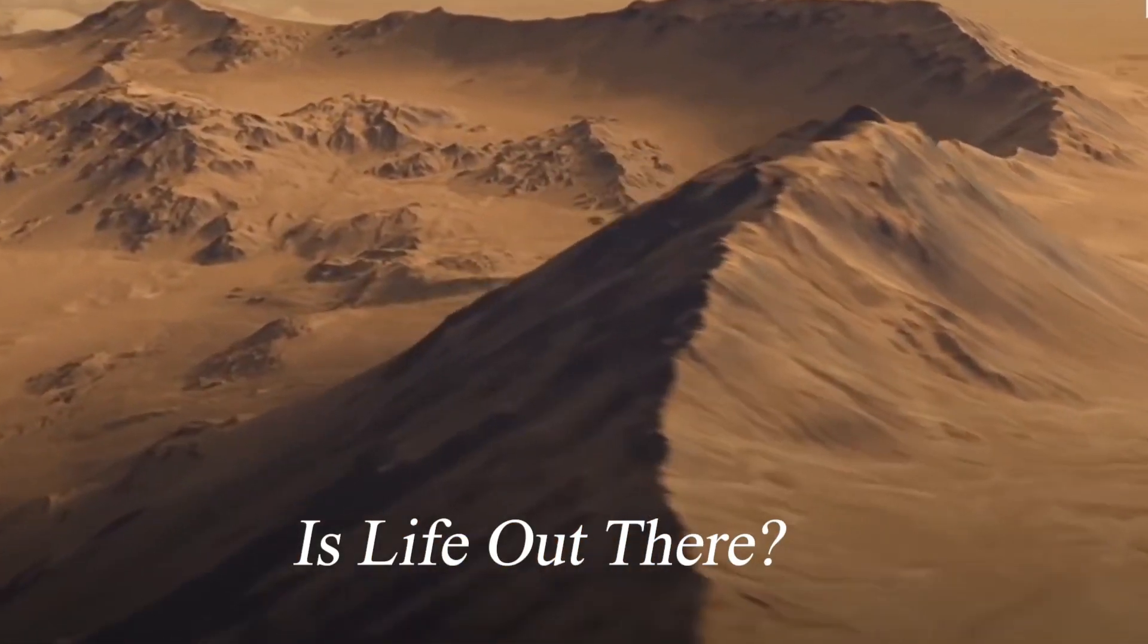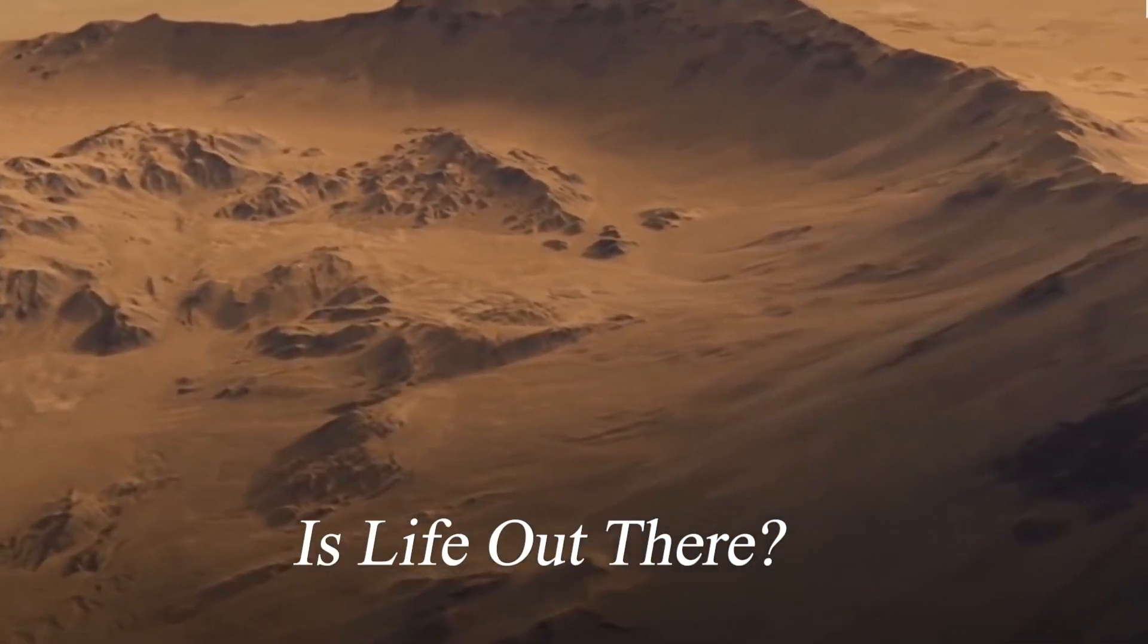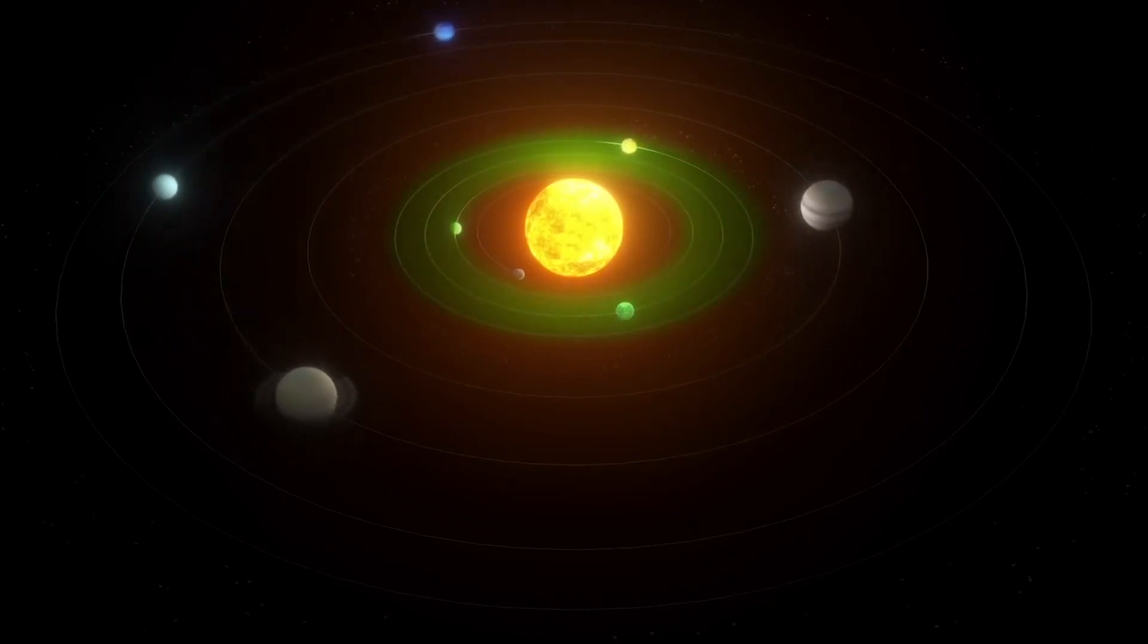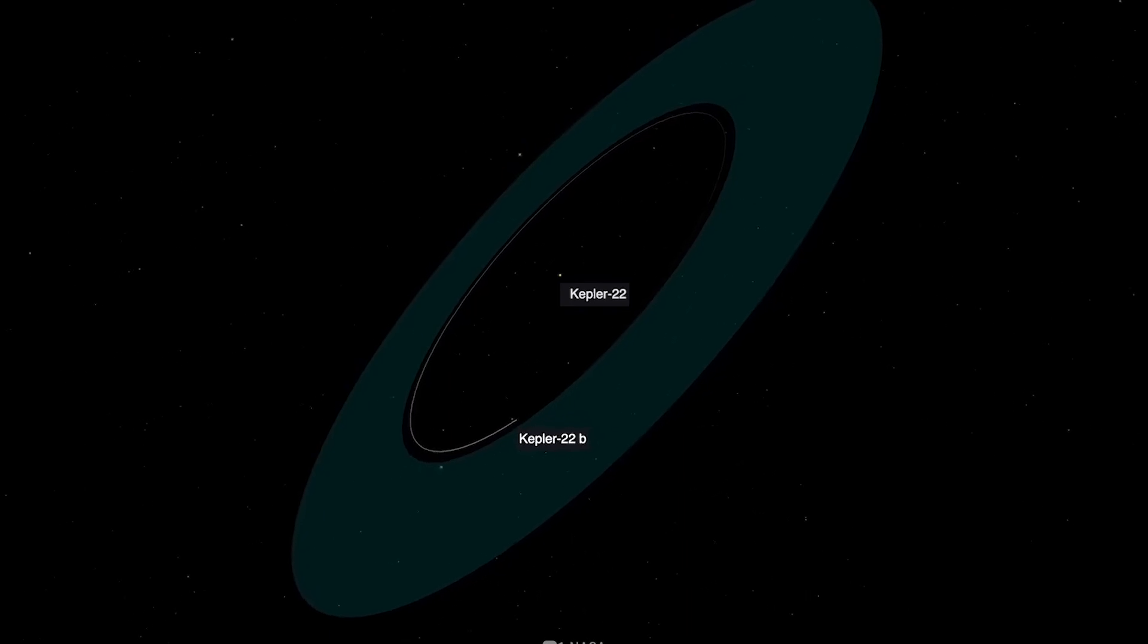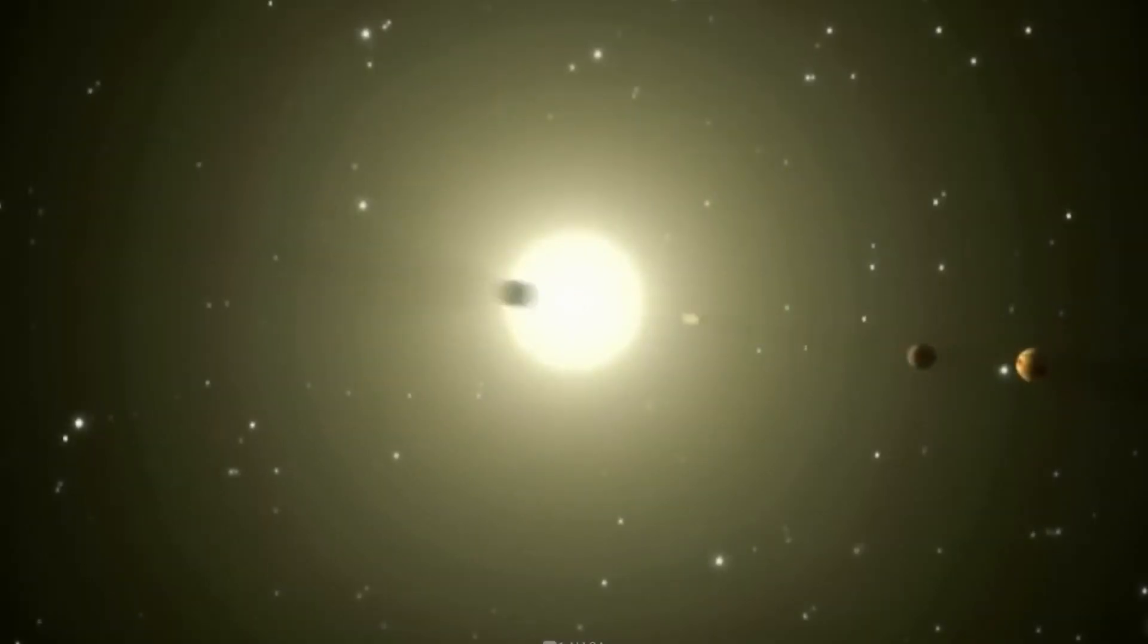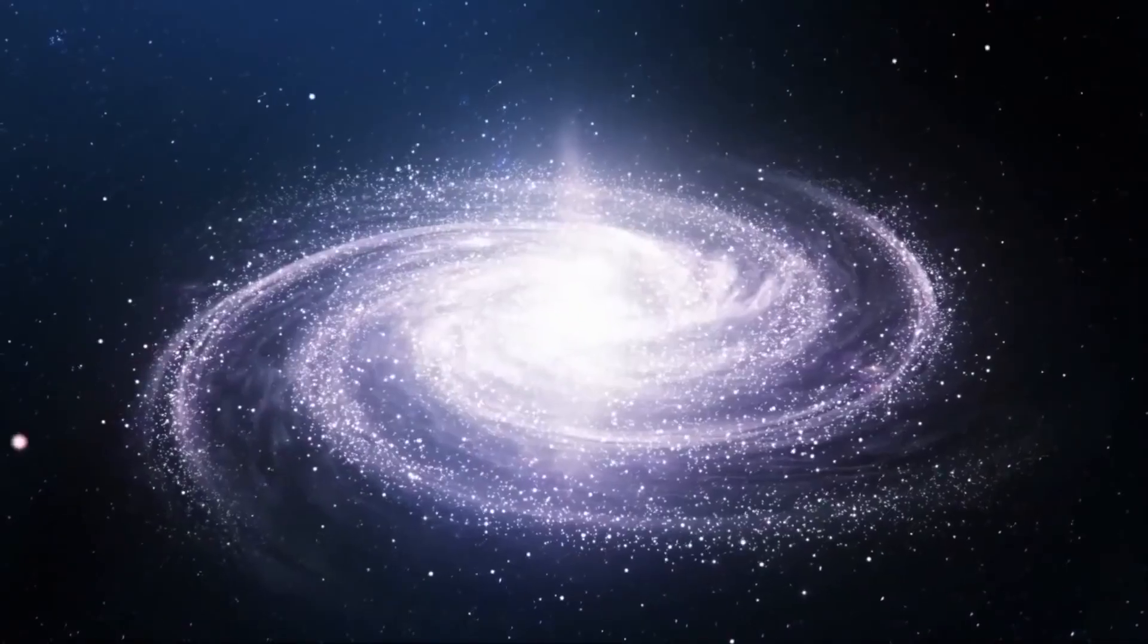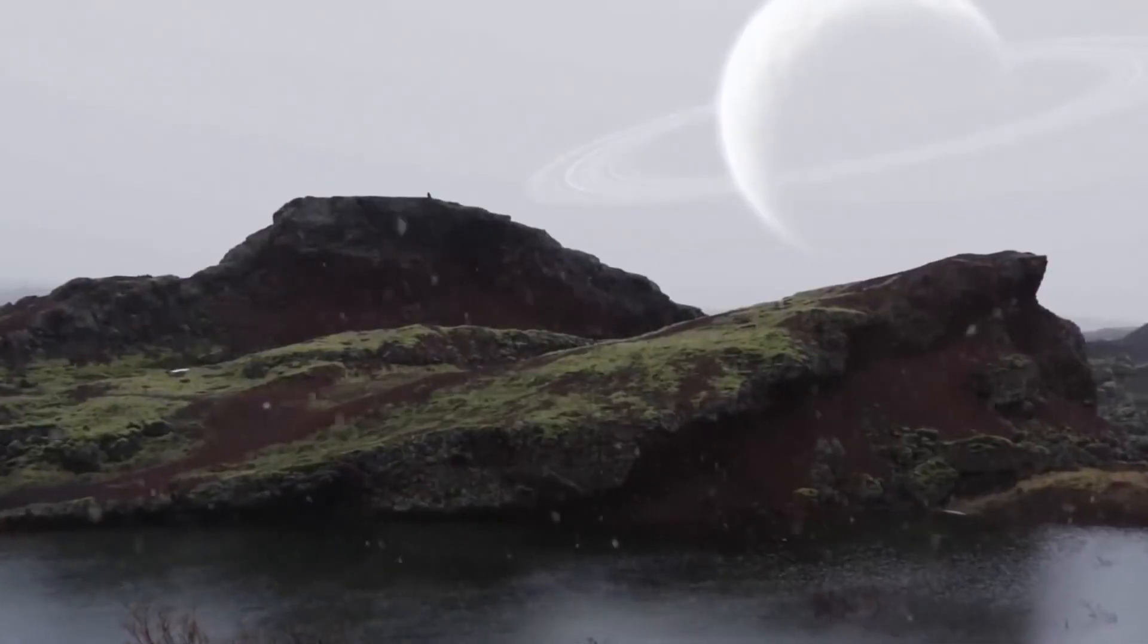Is life out there? An overwhelming percentage of the newly discovered candidates are small planets, and 48 of these candidates are in the so-called habitable zone, an area where temperatures are just right for life to form. Astronomers are thus zooming on Earth's twin rapidly, raising the possibility of answering one of our most profound questions: Is there life outside Earth?